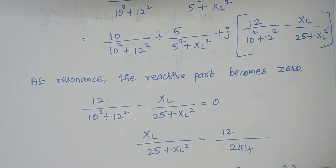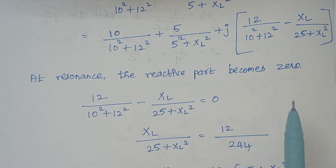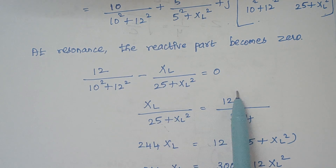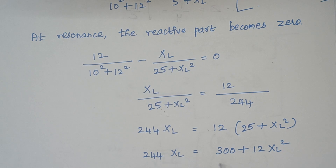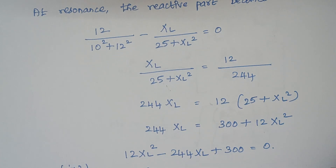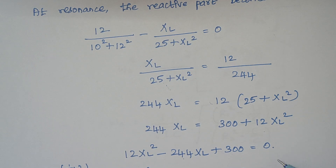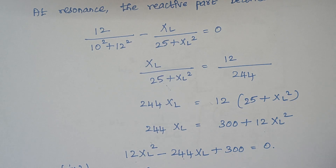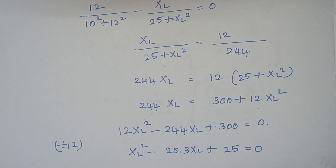When we rearrange, XL is moved to the right-hand side so it becomes positive. After cross multiplication and simplification, we get the quadratic equation: 12XL squared minus 244XL plus 300 equals 0. Dividing through by 12 gives XL squared minus 20.3XL plus 25 equals 0.